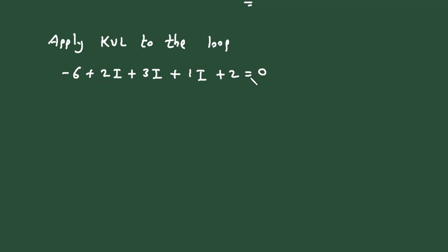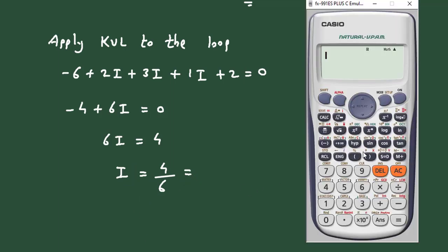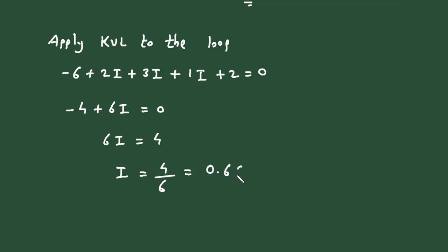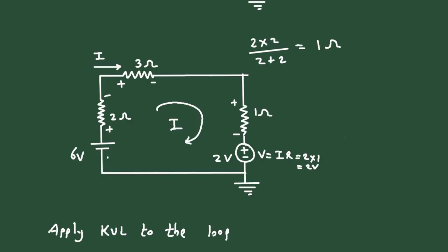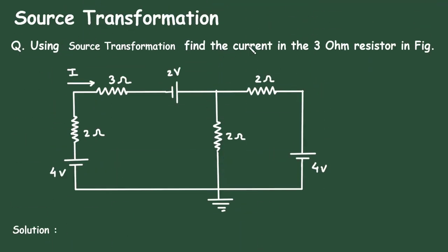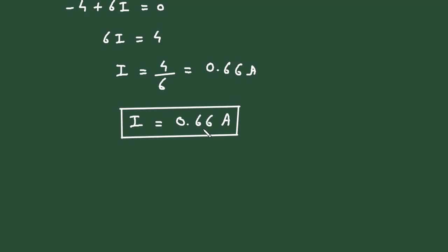Now we will solve this to get the value of current I. It will be minus 6 plus 2, which is minus 4, and 2 plus 3 is 5, plus 1 is 6. So plus 6I is equal to 0. Taking this to the right side: 6I is equal to 4, and I is equal to 4 by 6, which is 0.66 ampere. Therefore, the current in the 3 ohm resistor I is equal to 0.66 ampere.